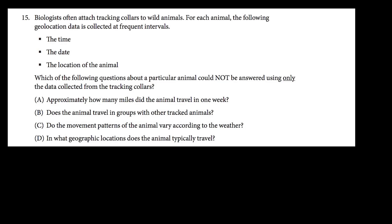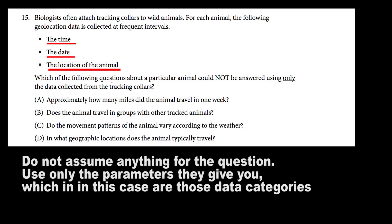Let's take a look at our last one, number 15. Biologists often attach tracking collars to wild animals. For each animal, the following geolocation data is collected at frequent intervals: the time, the date, and the location of the animal. Which of the following questions about a particular animal could not be answered using only the data collected from the tracking collars? On these questions where they provide you with data and ask what can or cannot be answered, we should not assume anything for the question — those three facets of data, nothing beyond that, can be used when approaching the options.